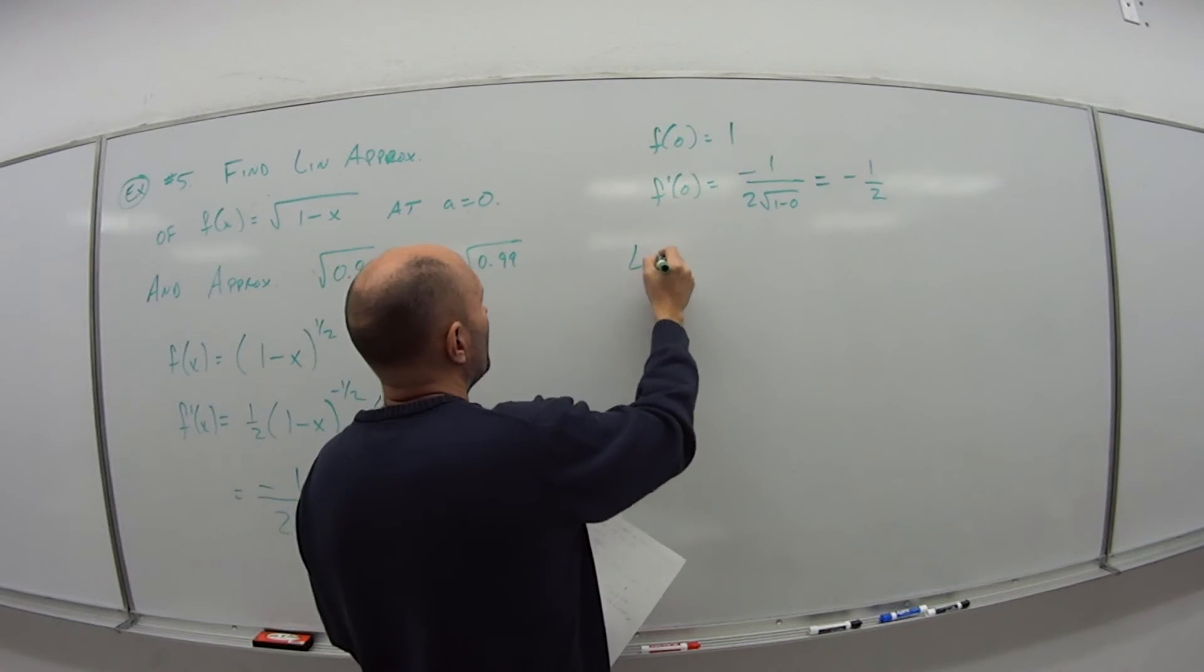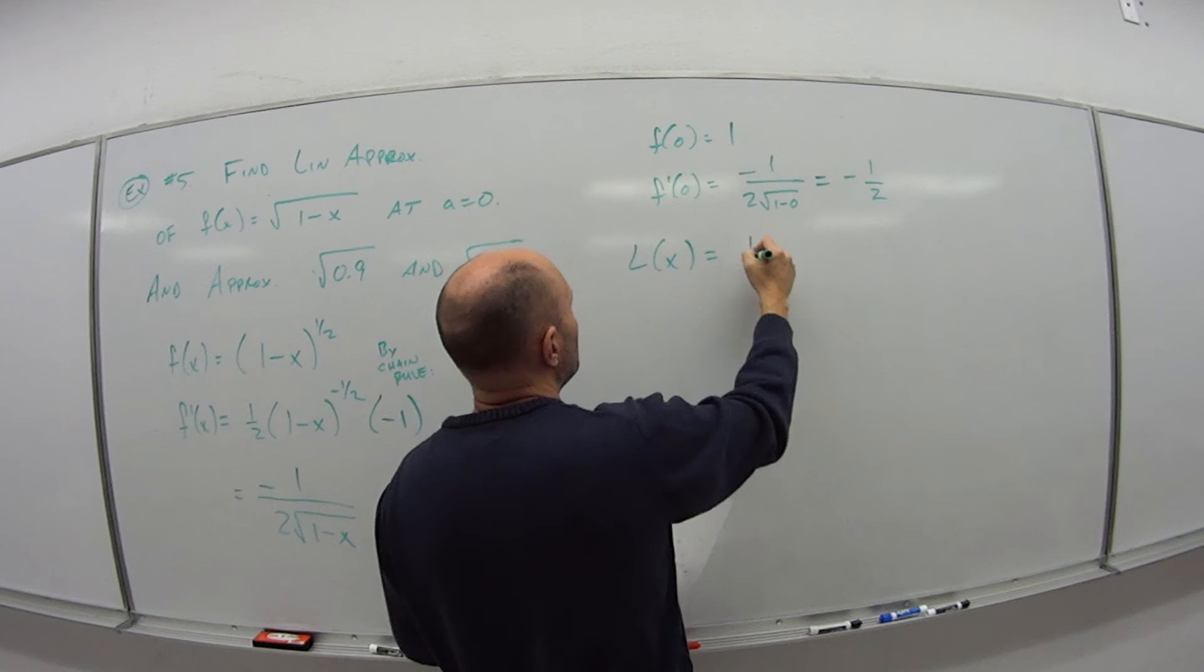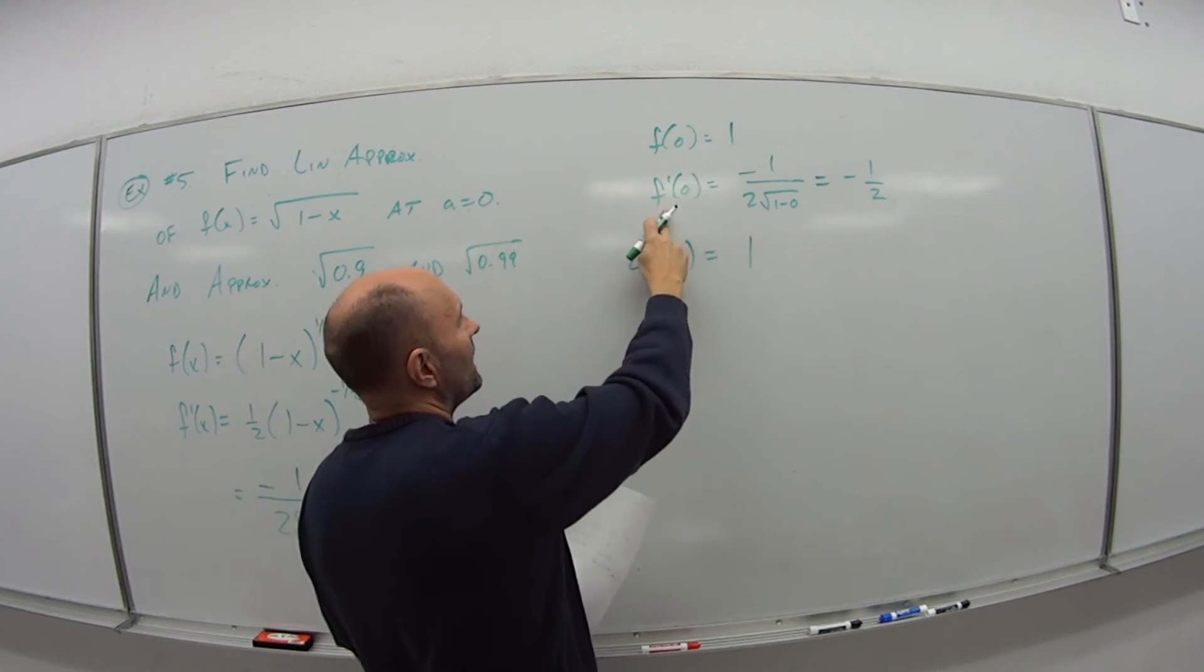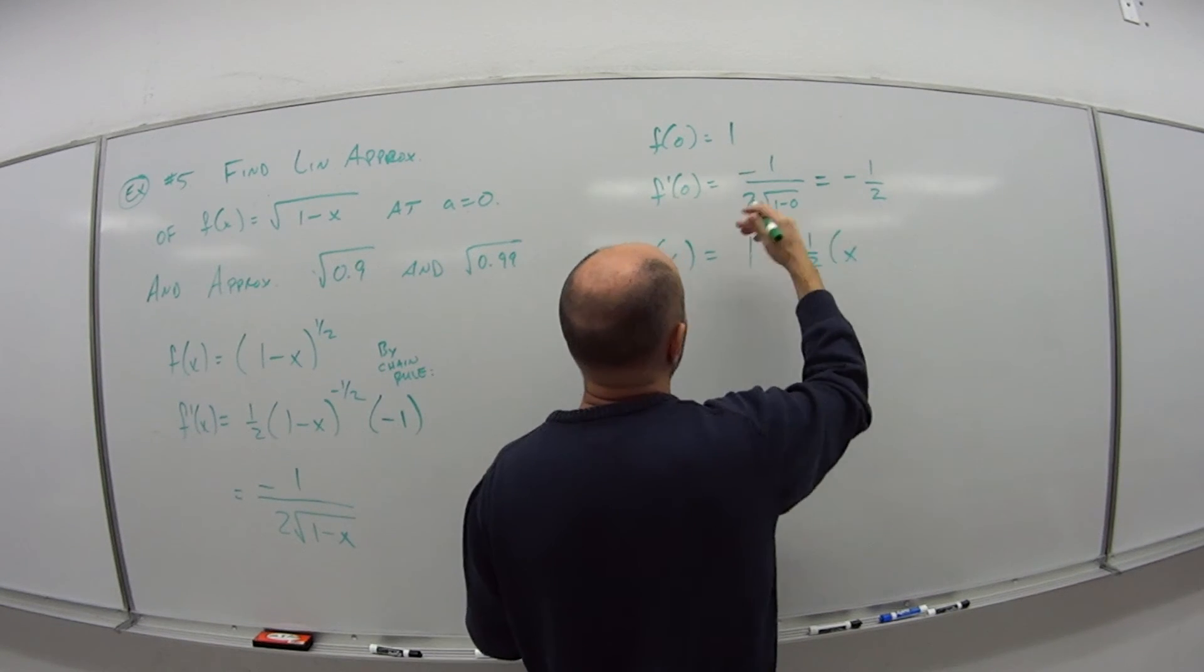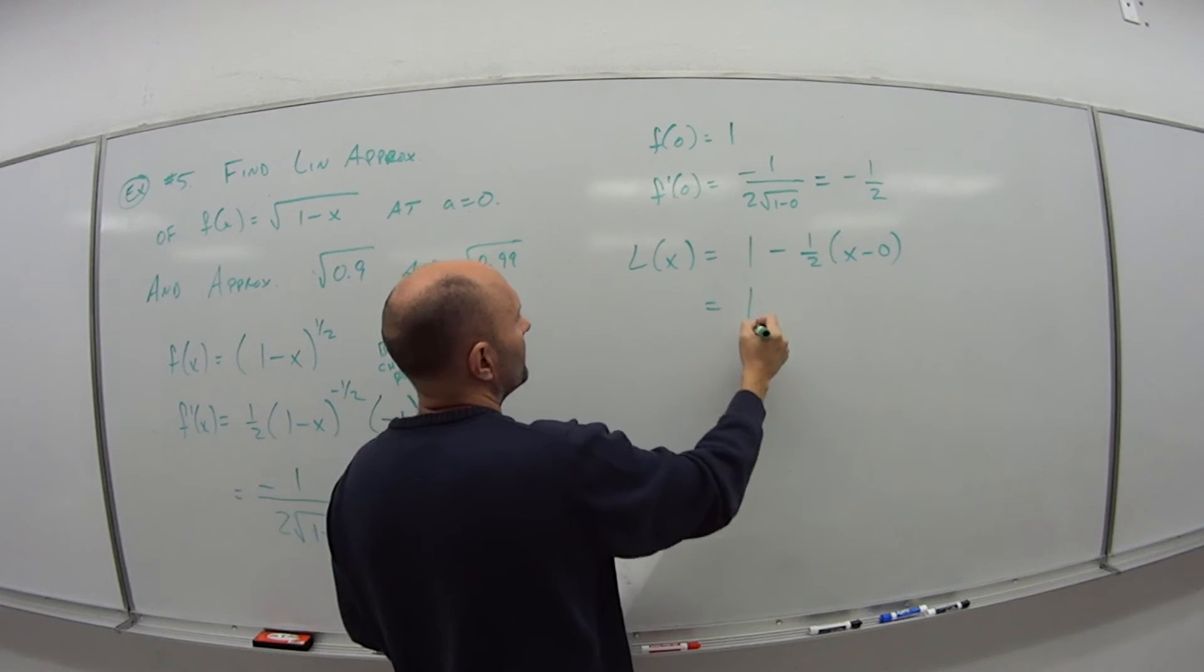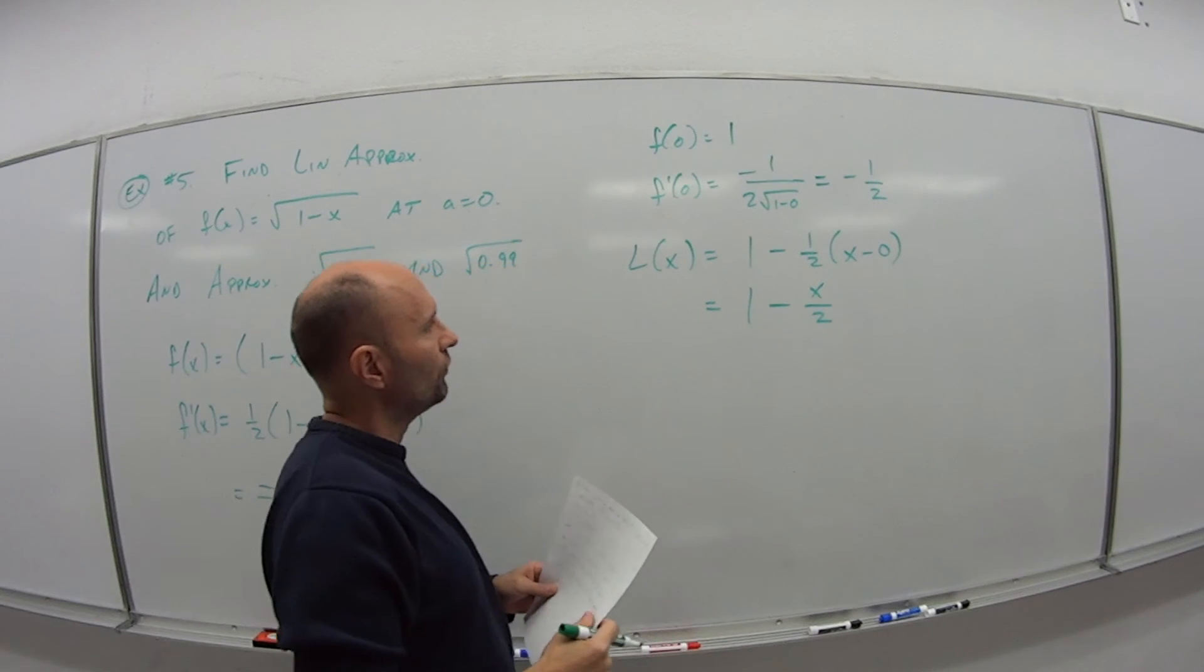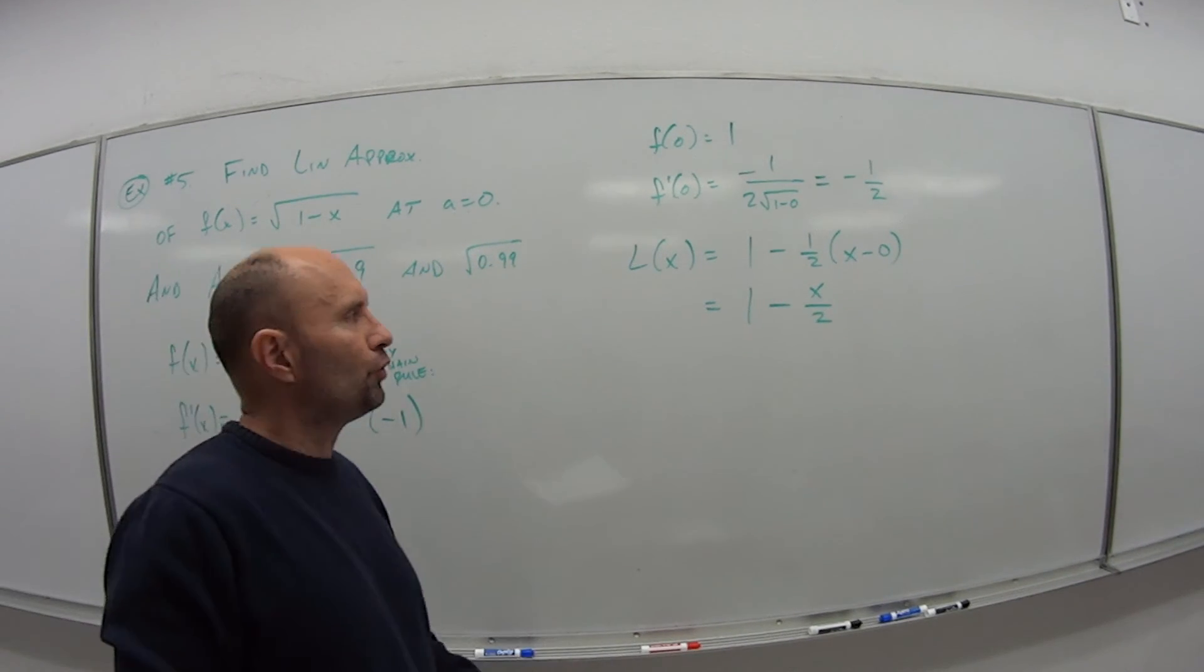So my linear approximation L of x is what? It's f of a, which is 1, plus f prime of a, which is minus 1 half, times x minus a, my a was 0. So if I simplify this, this is 1 minus x over 2. So that's my linear approximation.